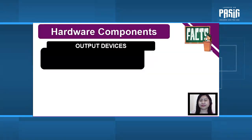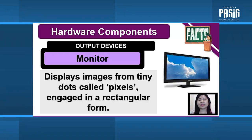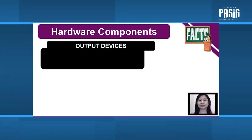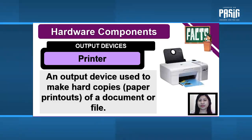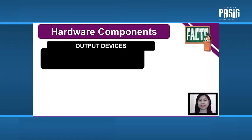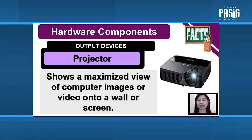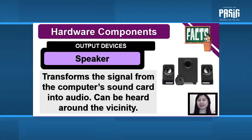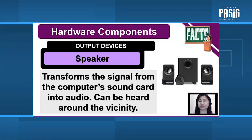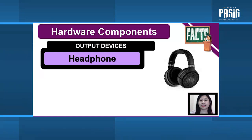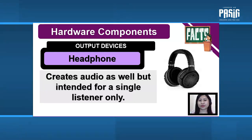Now let us look at some output devices. Monitor: displays images from tiny dots called pixels arranged in a rectangular form. Printer: an output device used to make hard copies or paper printouts of a document or file. Projector: shows a maximized view of computer images or video onto a wall or screen. Speaker: transforms the signal from the computer sound card into audio that can be heard around the vicinity. And the last one, headphone: creates audio as well but is intended for a single listener, as compared to a speaker.